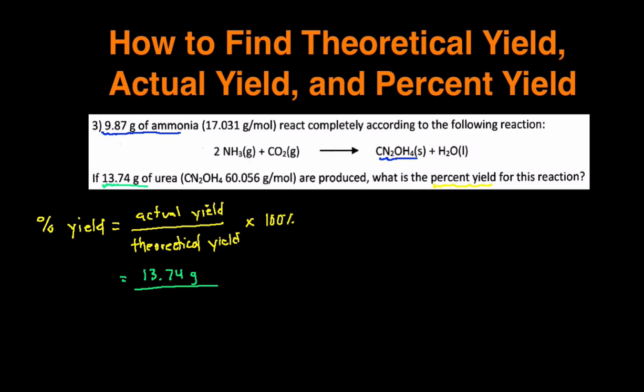We're going to take the 9.87 grams of ammonia, and our first step is to convert it into moles of ammonia. So that means we're going to divide by molar mass. I'm going to have the molar mass of ammonia on the bottom, 17.031 grams of ammonia, and then on the top, one mole of ammonia.